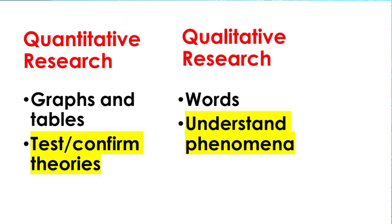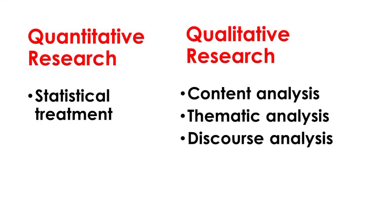After collecting these data, quantitative research is expressed in numbers through graphs and tables in order to test or confirm theories, while qualitative research is expressed in words in order to understand phenomena. Collected data then go through statistical analysis if they are quantitative in nature, whereas qualitative data are analyzed through content analysis, thematic analysis, or discourse analysis, whichever is most appropriate.